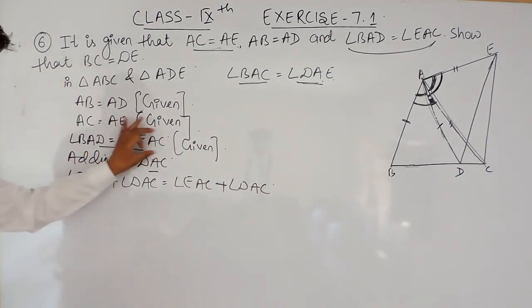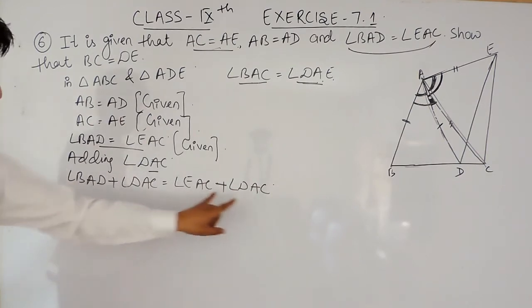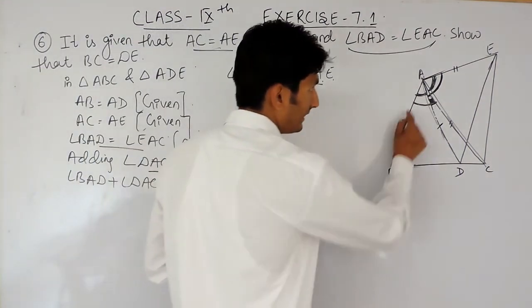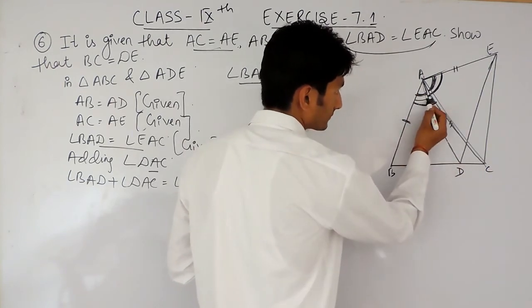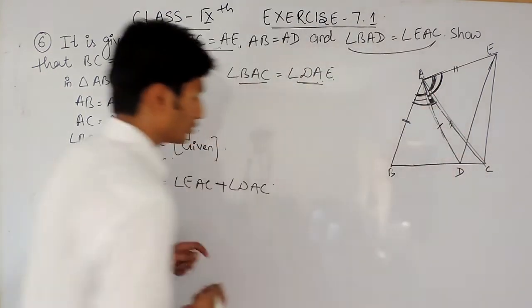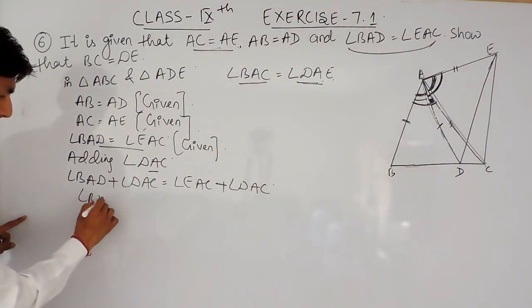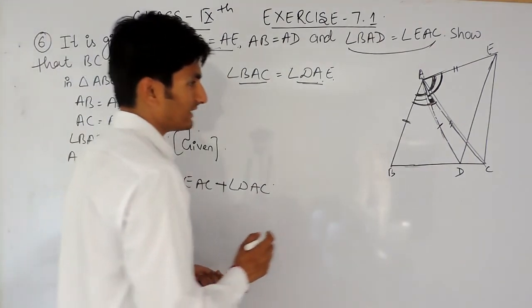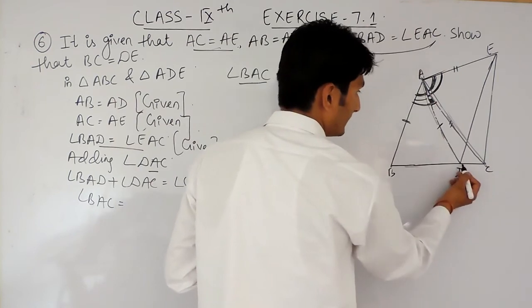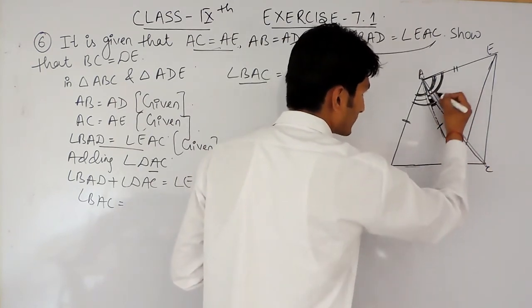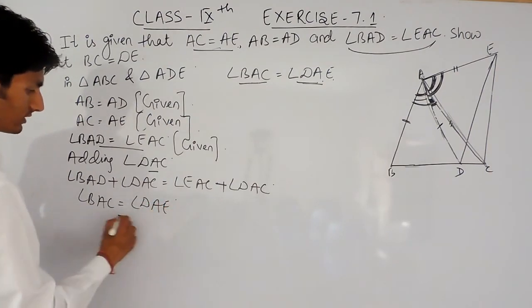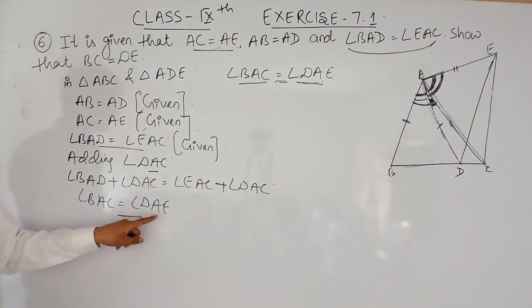Adding angle DAC to both sides gives us: angle BAD plus angle DAC equals angle EAC plus angle DAC. Angle BAD plus angle DAC becomes the complete angle BAC. Similarly, angle EAC plus angle DAC becomes the complete angle DAE. So we have proved that angle BAC equals angle DAE.